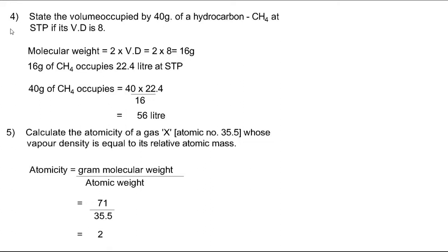Problem 4: State the volume occupied by 40 grams of methane (CH₄) at STP if its vapor density is 8. Molecular weight = 2 × 8 = 16. So 16 grams of methane occupies 22.4 liters at STP, because 16 grams = 1 mole, and 1 mole of any gas occupies 22.4 liters at STP. Therefore 40 grams of methane will occupy 40 × 22.4 / 16 = 56 liters.